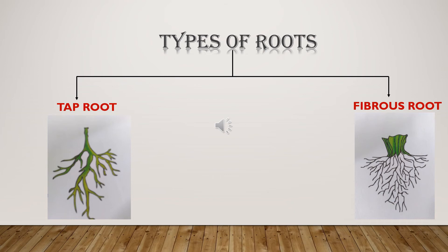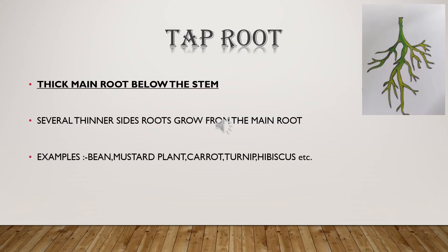Further, roots are divided into two parts: tap root and fibrous root. Children, look at the picture carefully. There is a main root, and from that main root, several thin side roots grow out — that is what a tap root is. Most trees have tap roots. A few examples are carrot, radish, beetroot, turnip, hibiscus, etc. Tap roots grow deep into the soil.